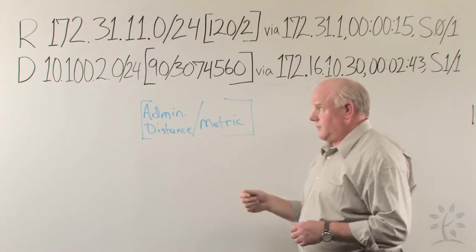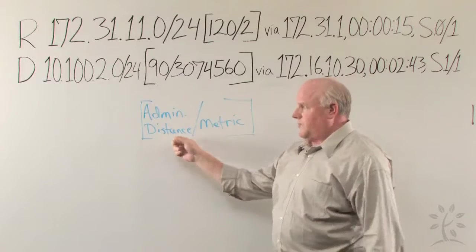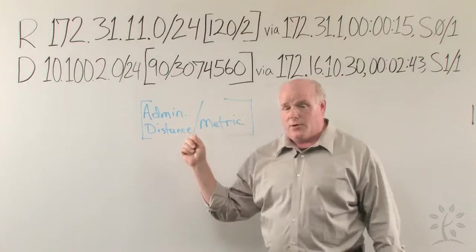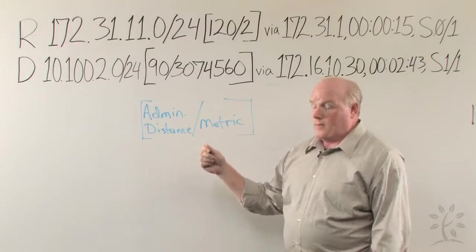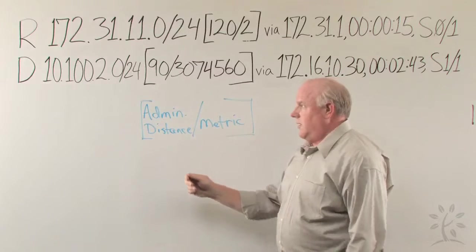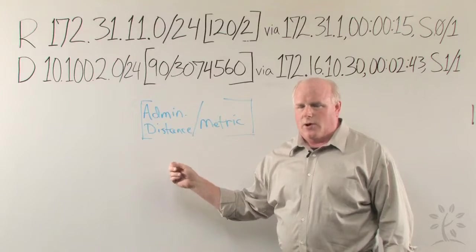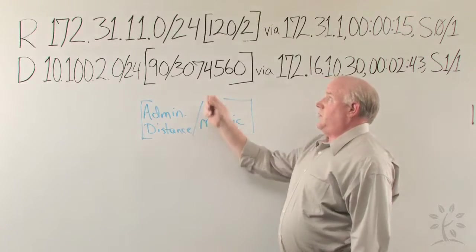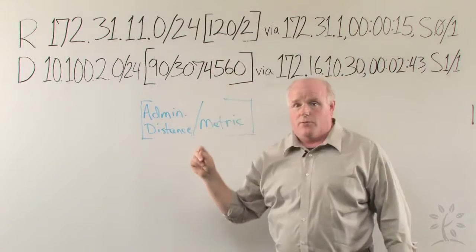You can also manipulate this administrative distance by making it higher than it should be. Configure a static route—this is a little more challenging, but it's worth trying—configure a static route that should have an administrative distance of one, but at the end of the command, type 121 to make the administrative distance less reliable than RIP.